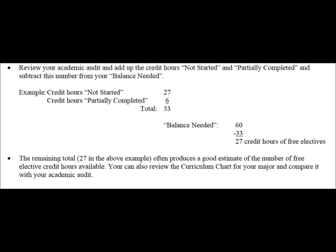Those are the not started, partially completed, or in progress courses. Another way is to add up the credit hours — not started and partially completed. In this example, they total 33 credit hours. Next, subtract 33 from 60, the balance needed. The result is 27 credit hours of free electives.